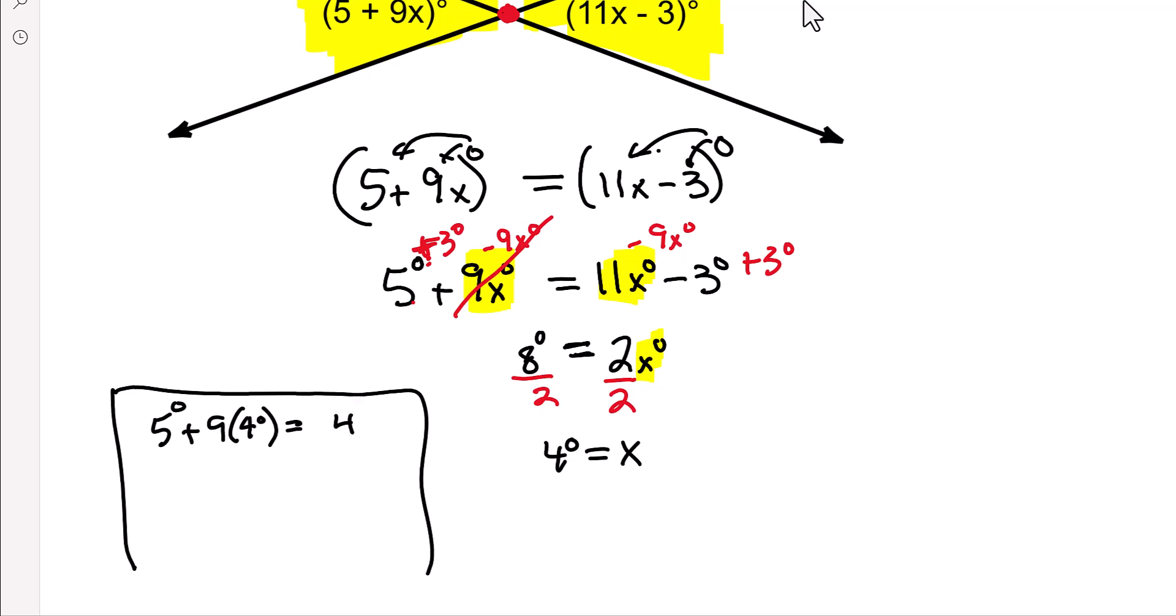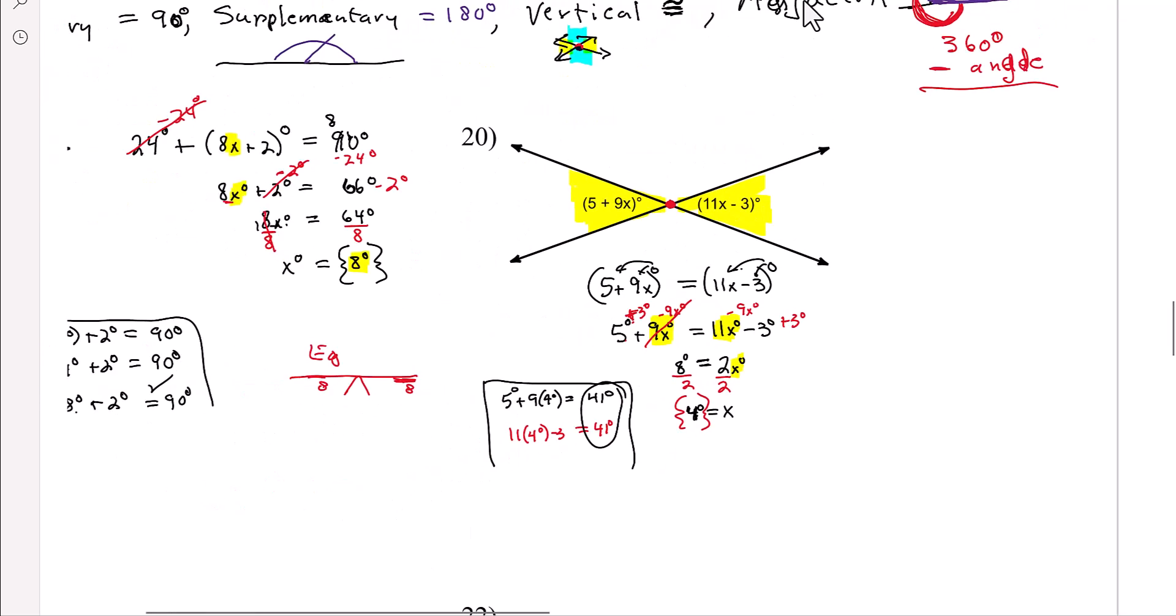Now let's check the other side. 11 times the x value is 4, subtract 3. Well, 44 subtract 3 is also 41 degrees. So 4 degrees is correct. That made those two angles equal each other. Two angle measures equal each other.